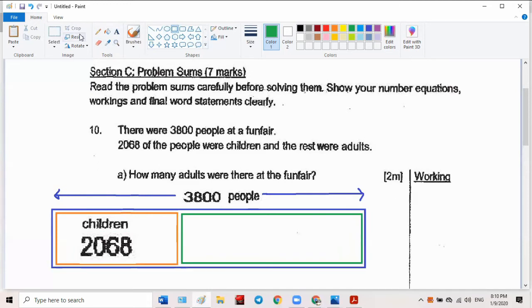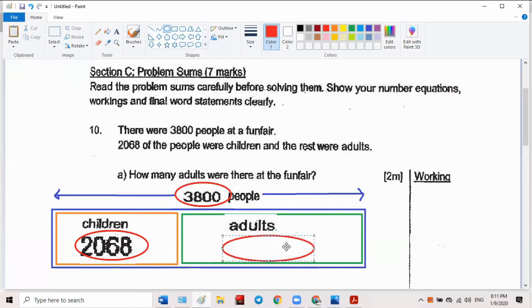How many adults were there at the funfair? What must you do? So this must be equal to this plus this. Agree or not? So what must you do? 3800. Plus or minus? Think first. You already need minus. Tell me, show me.